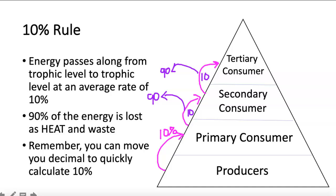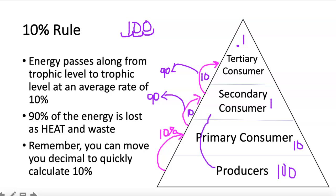You should be able to do your 10% calculations. The easy way: if you have 100 units of energy at your producer level, move your decimal in one place. So 100 at producer gives you 10 at the primary consumer level — the other 90 is lost to heat. Move it in one more: secondary level has just 1. Move it in again: tertiary level has 0.1. Also be ready to calculate how much energy is lost — for example, from producer to secondary consumer, you'd take 100 minus 1, so 99 units of energy are lost in those two jumps.